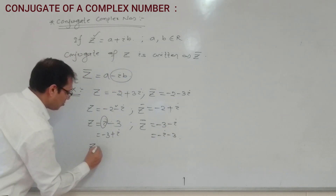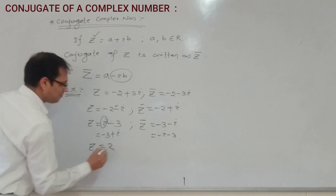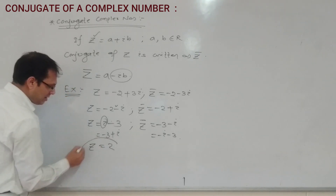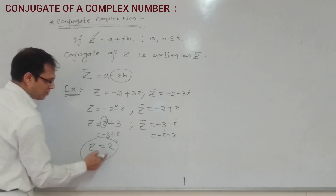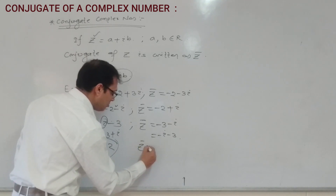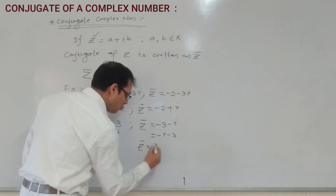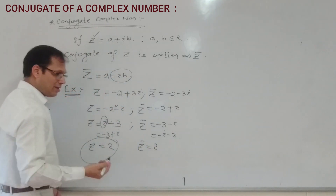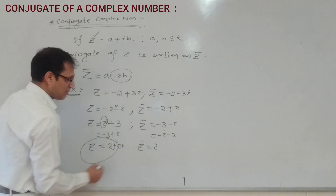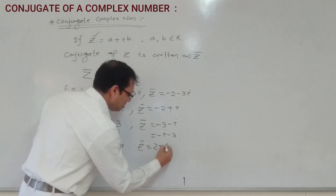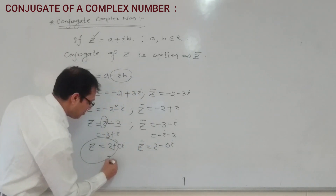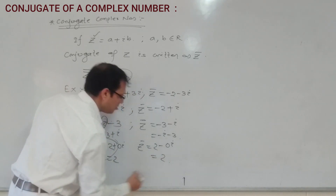Suppose Z is equal to only 2 — it is a purely real complex number. There is no imaginary part. Z bar is equal to 2. Why? Because 2 can be written as 2 plus 0i, and its conjugate is 2 minus 0i, which is still 2.